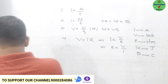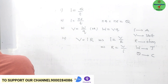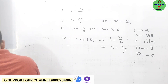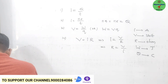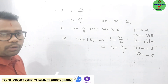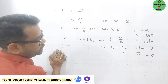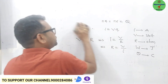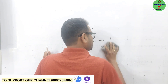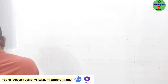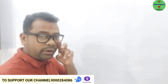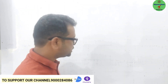We will now start the numericals. As we know there are two units. First we will solve the numericals based on unit A, then we come to unit B. Unit A, first numerical.